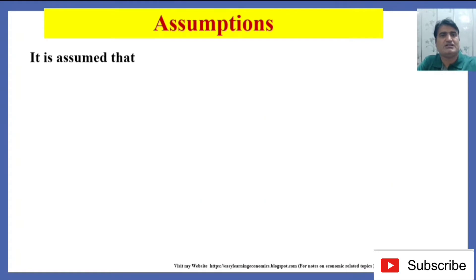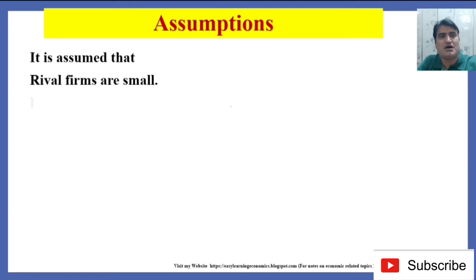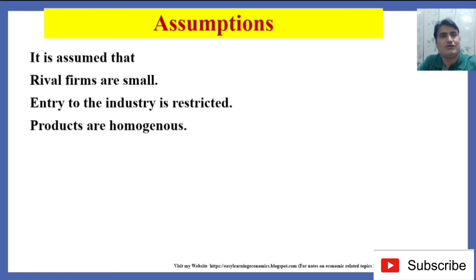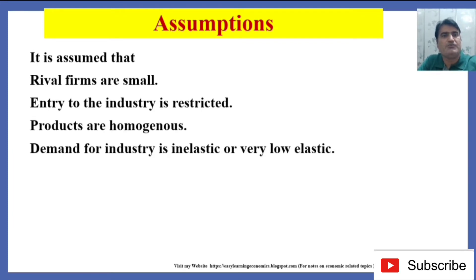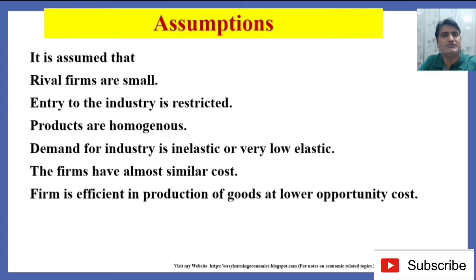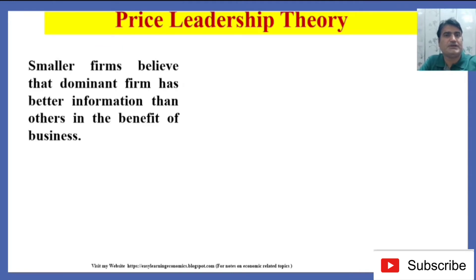What are the conditions on which the price leadership model functions? It is assumed that the rival firms are small, entry to the industry is restricted, products are homogenous, demand for the industry is inelastic or very low elastic, the firms have almost similar costs, and the firm is efficient in production of goods at a lower opportunity cost. Price leadership theory means smaller firms believe that the dominant firm has better information than others for the benefit of business.